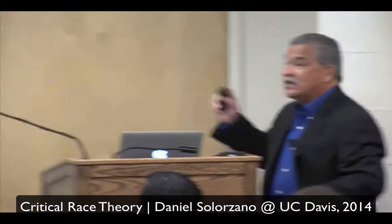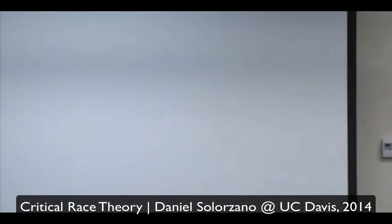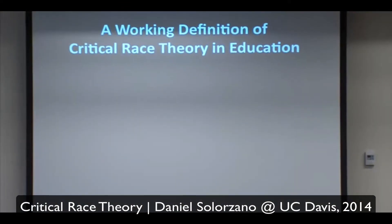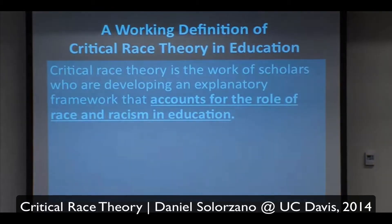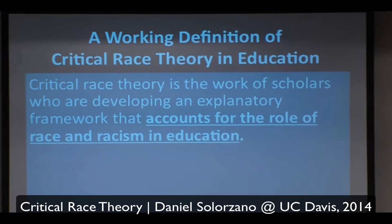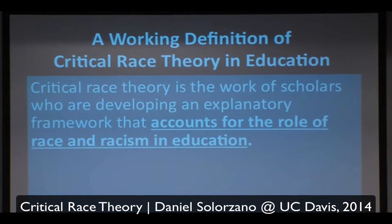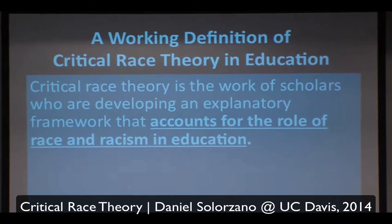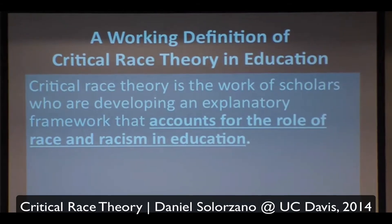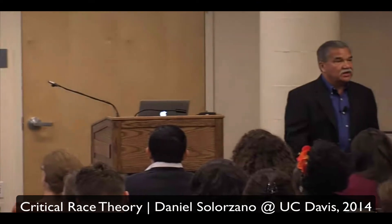My working definition of critical race theory — this has been ongoing and evolving over the years, just to set the context. Critical race theory is the work of scholars, many of us in this room, who are developing an explanatory framework — because that's what theory does, it explains phenomena — it's a tool we use to explain phenomena in whatever field we're in, that accounts for the role of race and racism in education. That's what we try to do: we try to account for the role of race and racism in education.